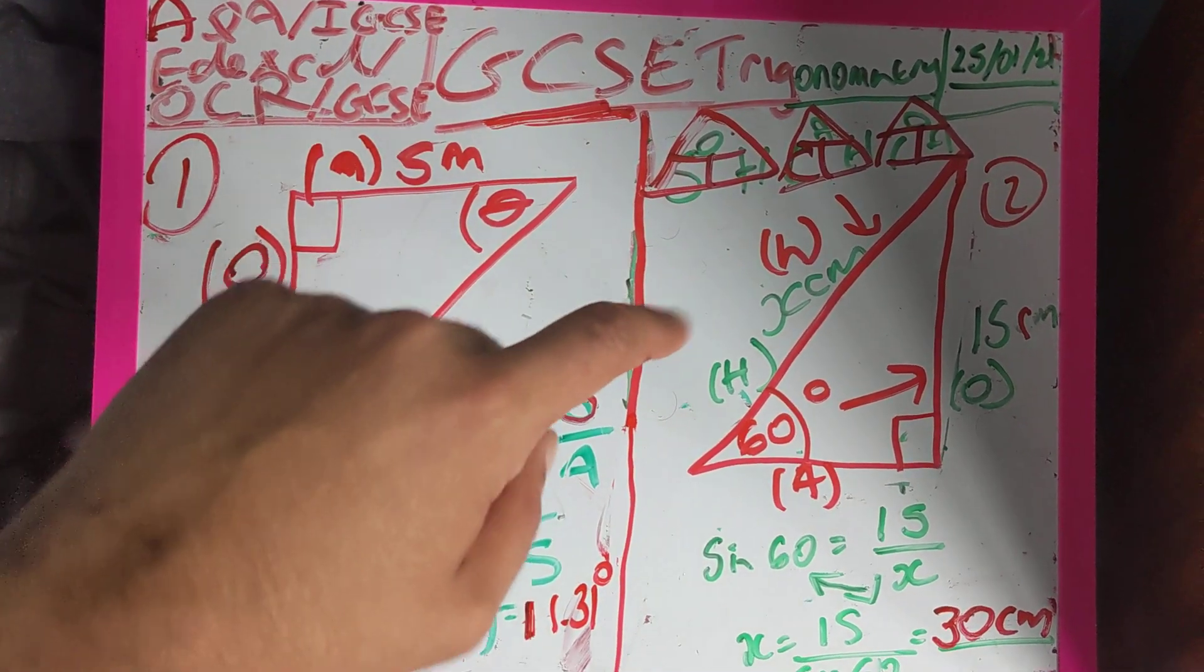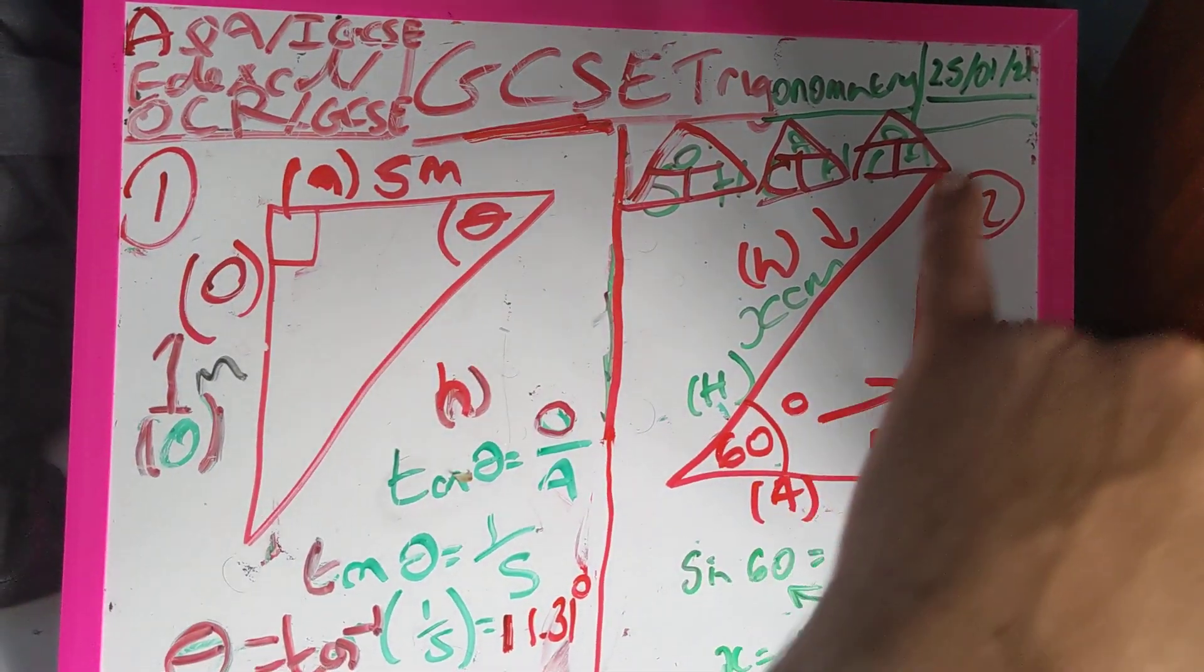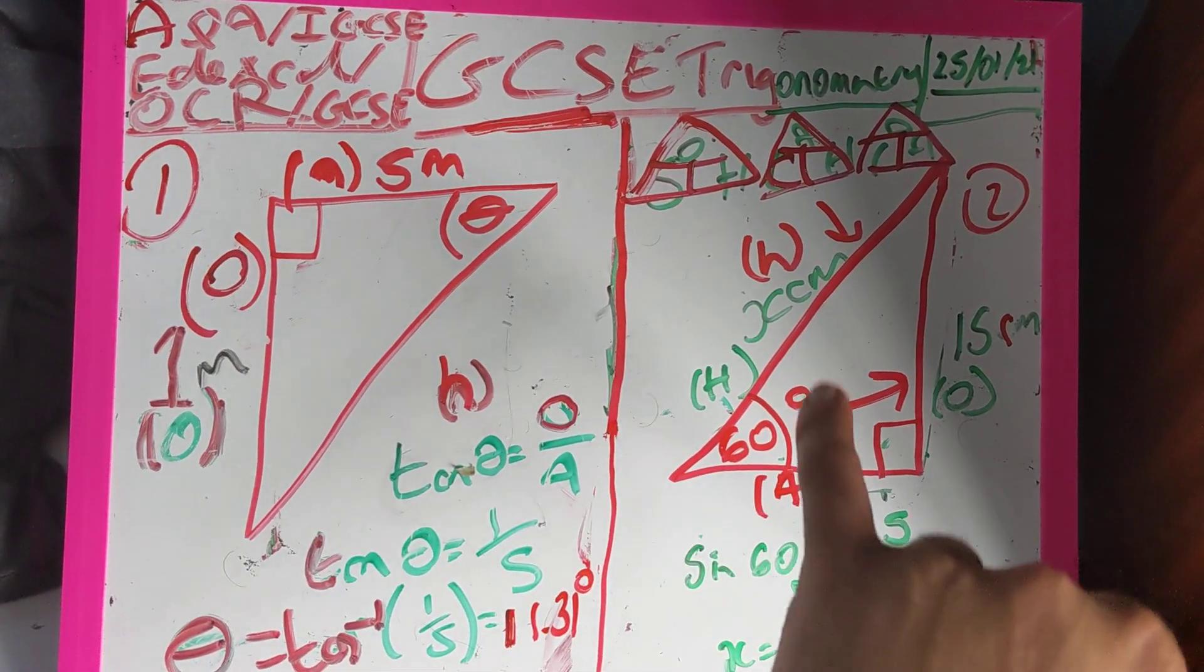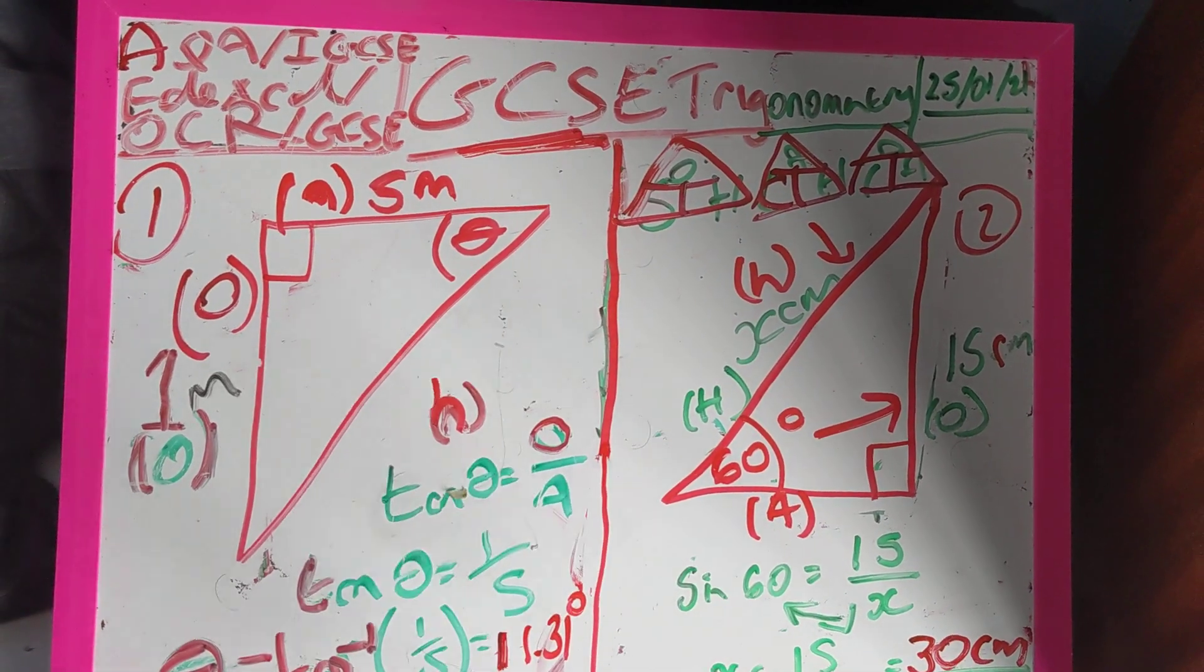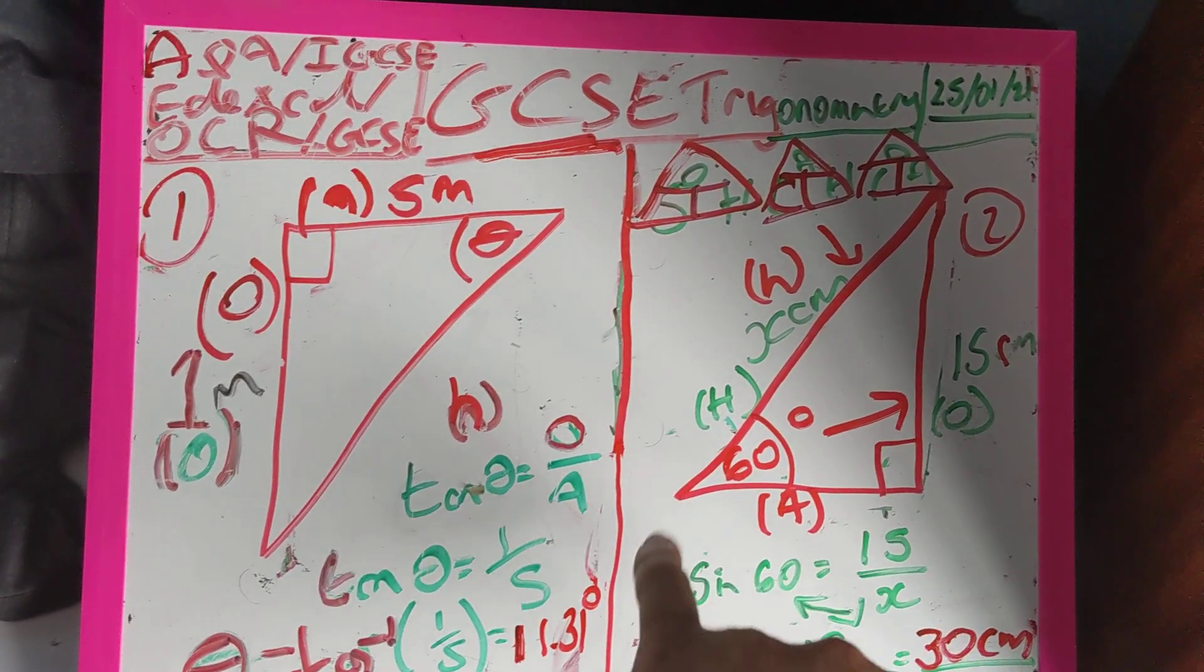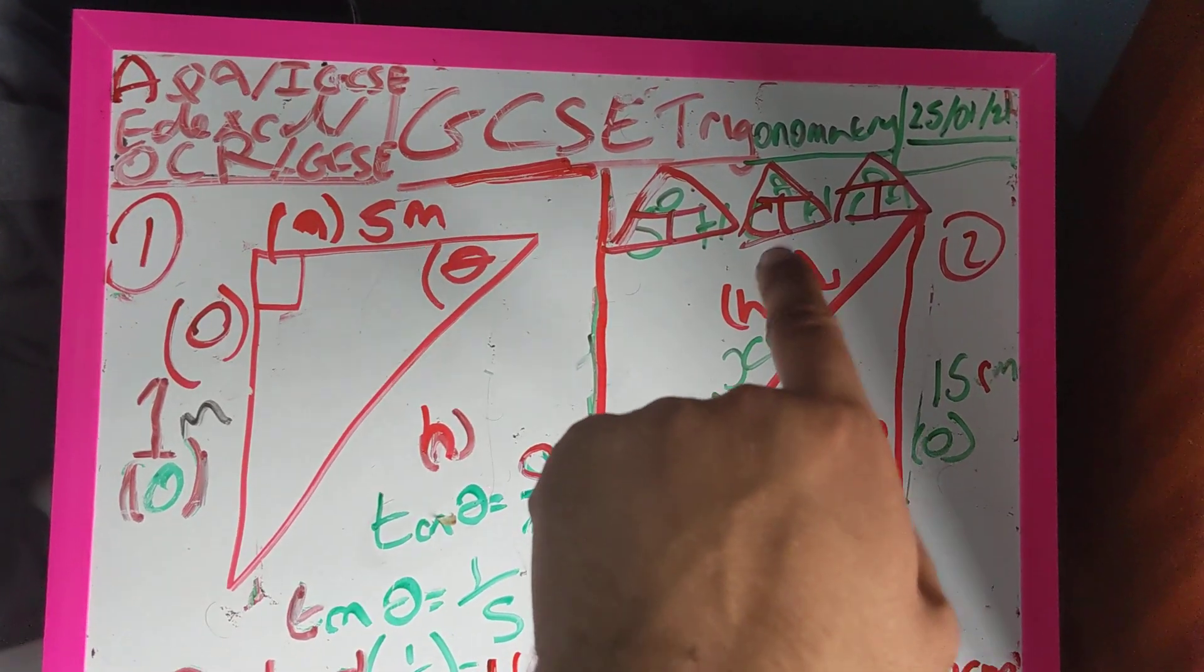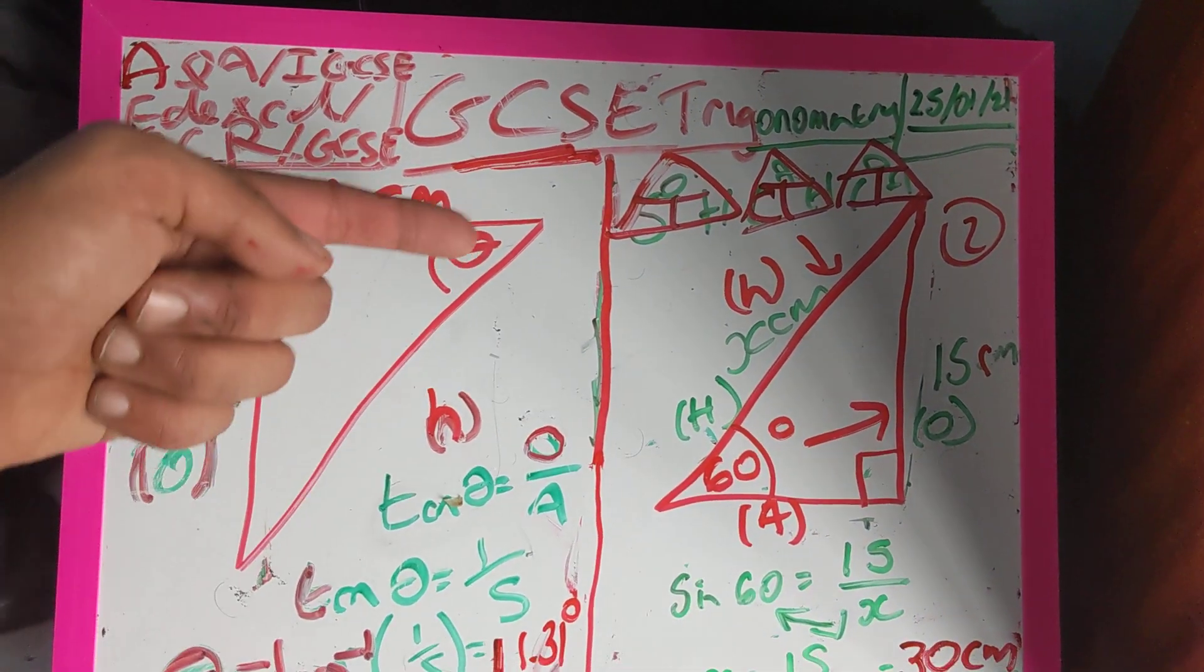Right guys, example number two. Again, so it is a right angle triangle here. I've got an angle, I've been asked to work out what X is, which is the hypotenuse and I've got an opposite and I've got an adjacent which I'm not giving any info about. So I can't use a cos or tan, so it has to be sine.